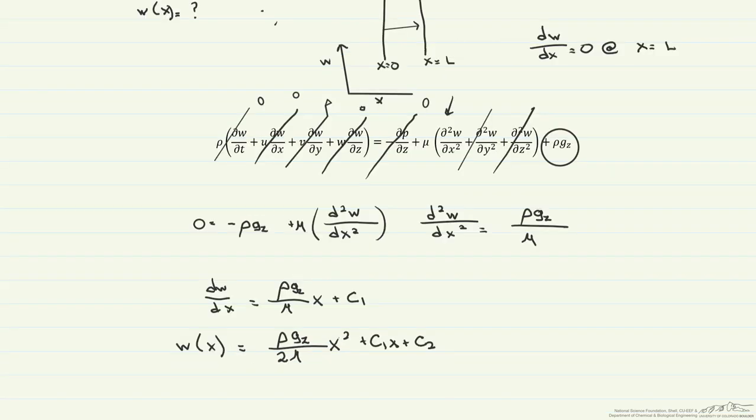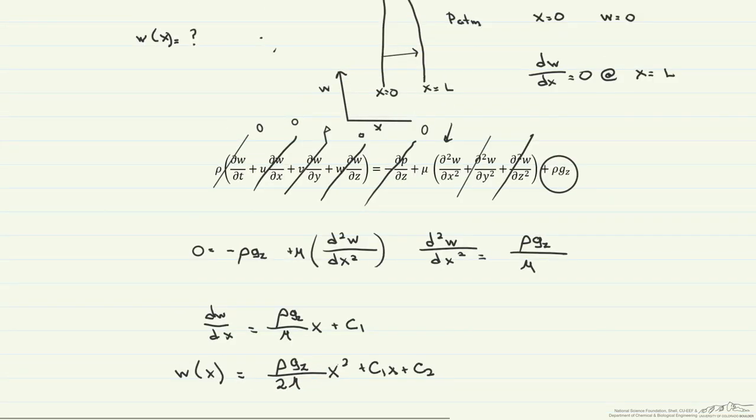So now let's use these boundary conditions. So the first one we're going to use at x equals zero, w equals zero. And if we put that into this equation, this is zero, this is zero, that's zero. Therefore our c2 is going to be equal to zero.